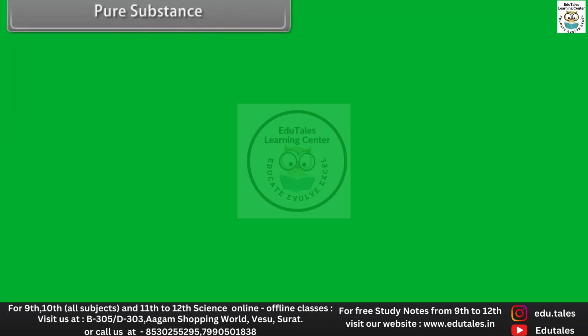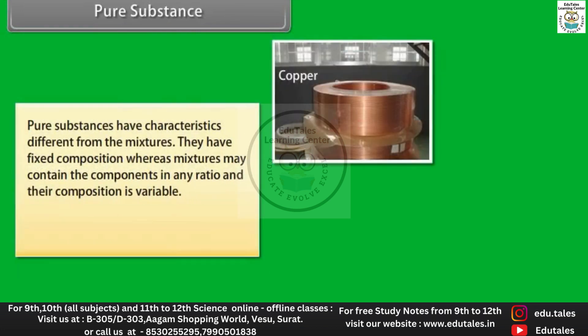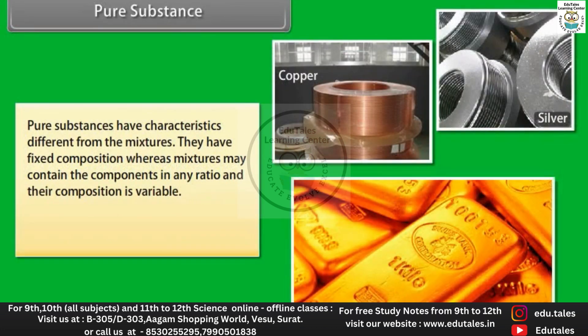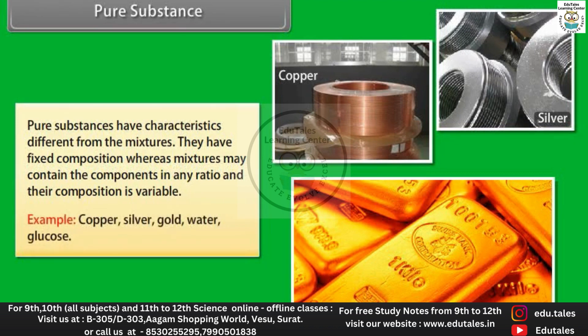Pure substances have characteristics different from the mixtures. They have fixed composition, whereas mixtures may contain the components in any ratio and their composition is variable. Example: copper, silver, gold, water, glucose.